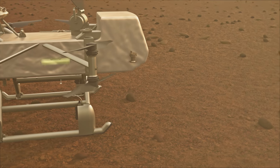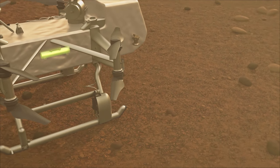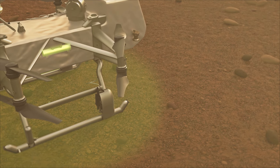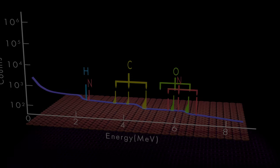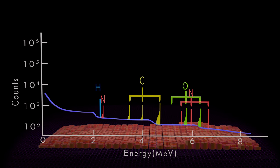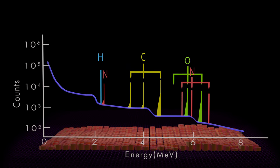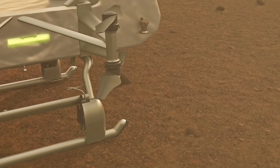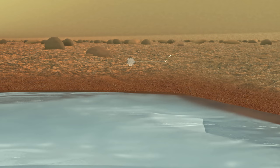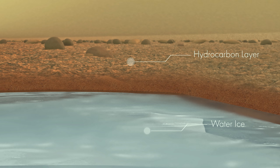At each new landing site on Titan's surface, Dragonfly uses a pulsed neutron generator and onboard gamma-ray sensor to detect key elements such as carbon and hydrogen in organic materials or oxygen in water ice. Dragonfly determines if there are well-defined layers of these materials just below the lander.